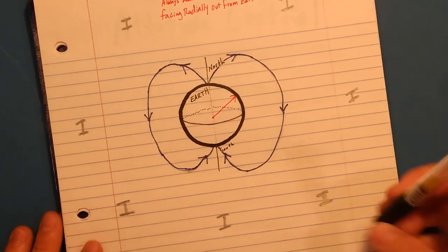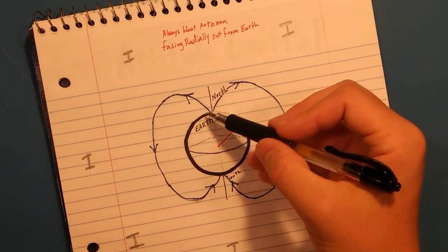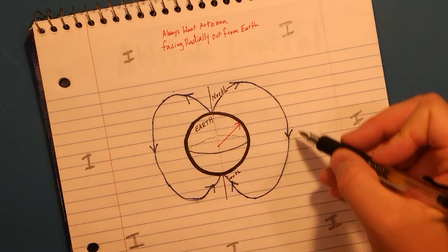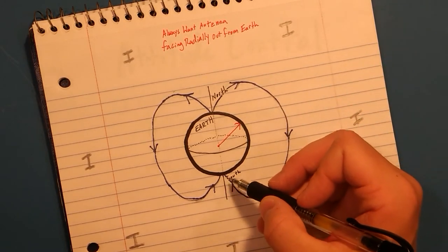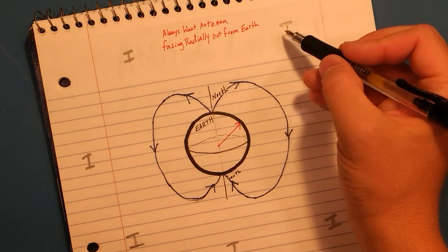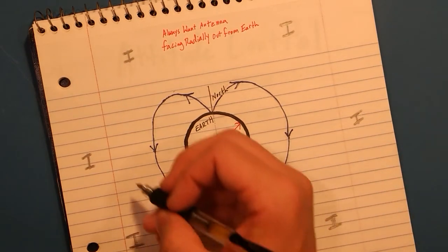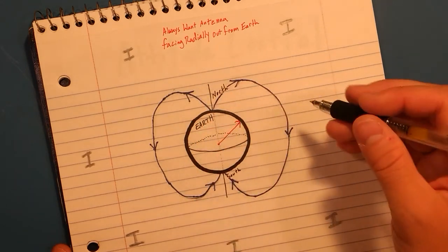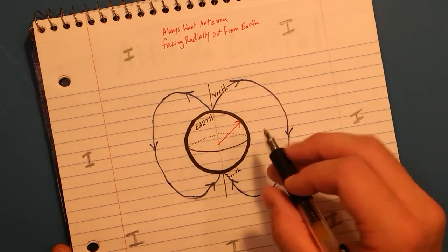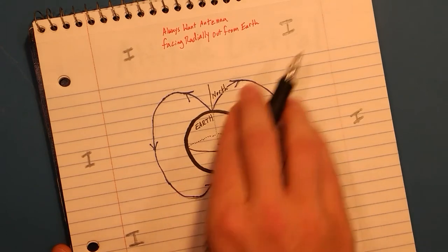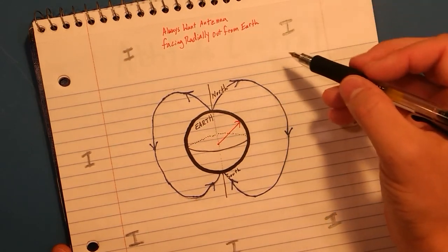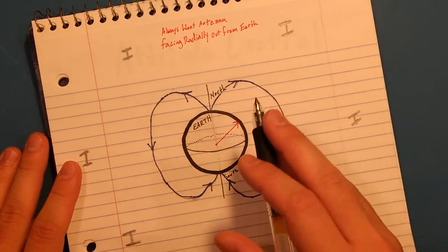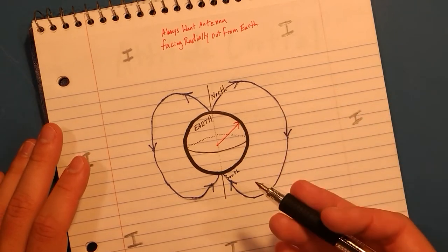Here we have a nice little model of the Earth. We have the magnetic north pole of the Earth, and you can see the direction of the B field, or of the magnetic field, going around to the south pole. And these eyes are the representation of what the Iridium satellite constellation would be. Essentially, I want the antenna for my Iridium modem to always be facing radially outward from the Earth, always facing the satellites.